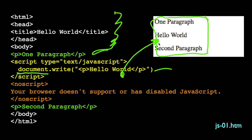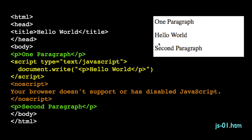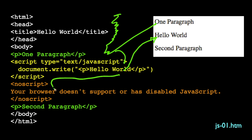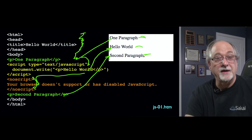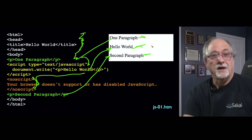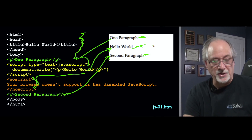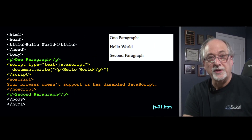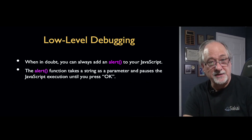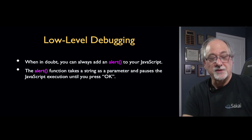document.write writes onto the screen. Looking at this code, it comes down: out comes the title, the body, the paragraph, then it drops into JavaScript, and this little string gets written out. The no-script tag is in case there's no JavaScript, which is really rare these days. The point is this has created a three-line web page — the first and third lines come from HTML, and the second line comes from JavaScript.